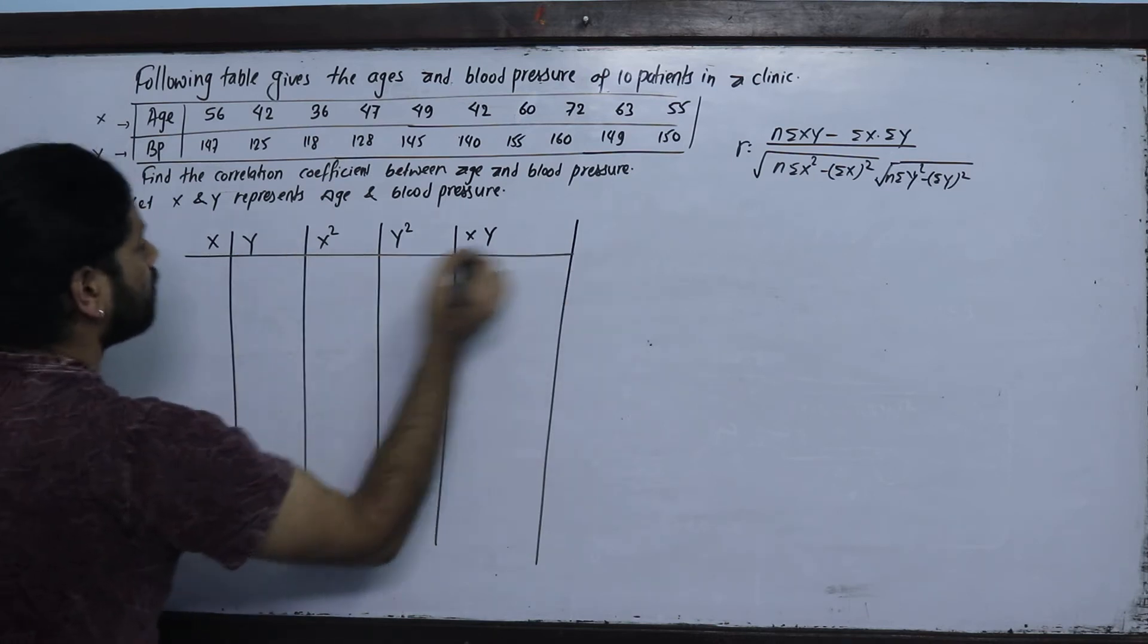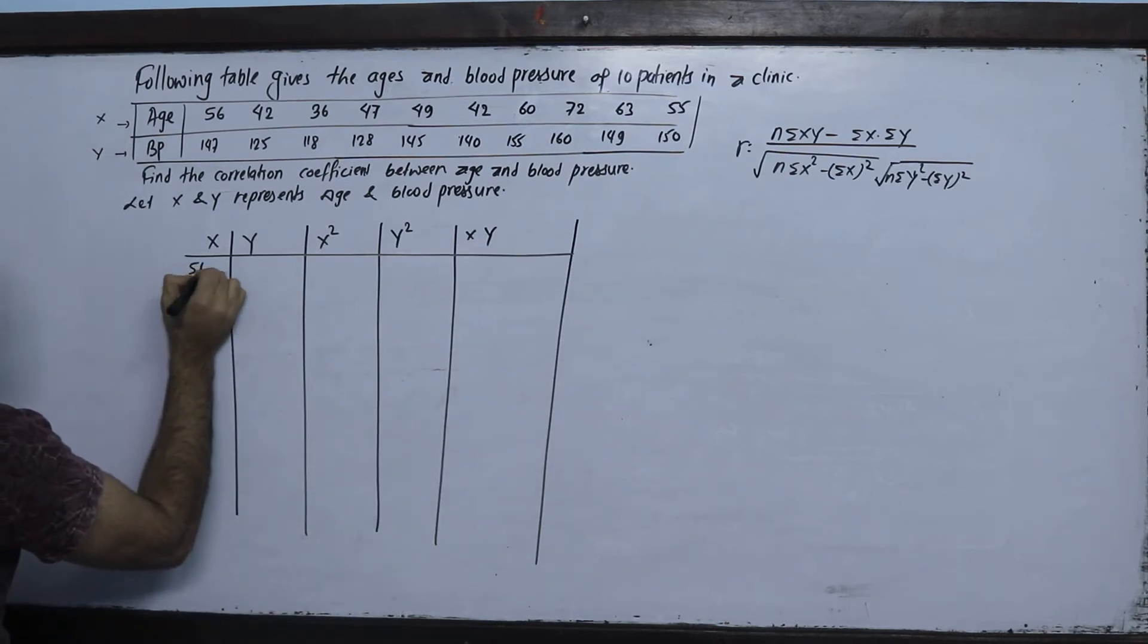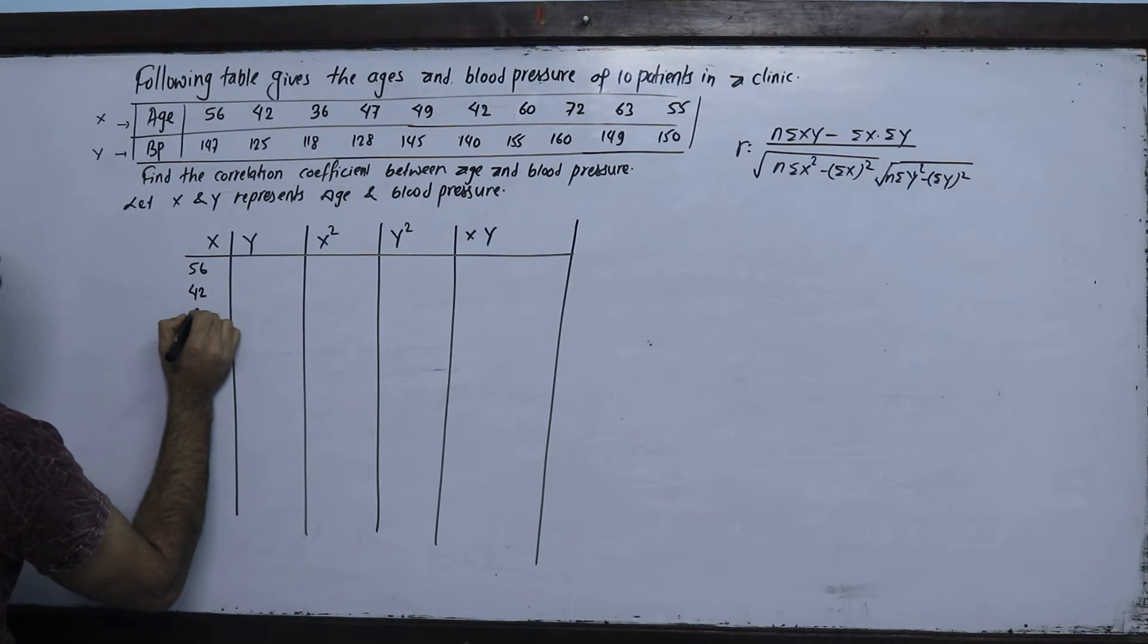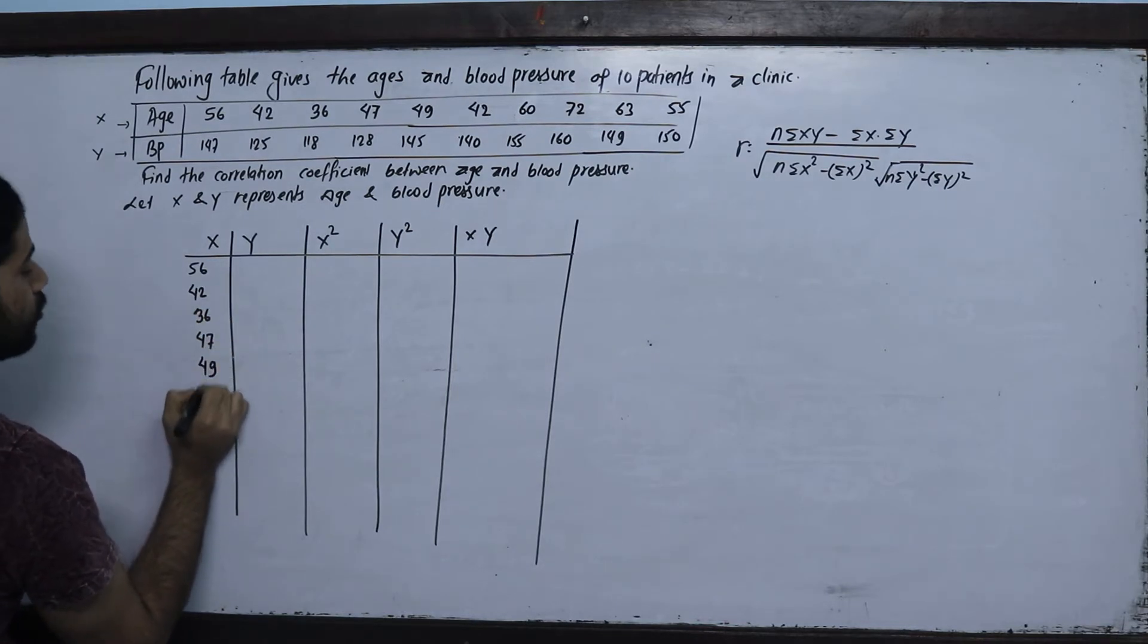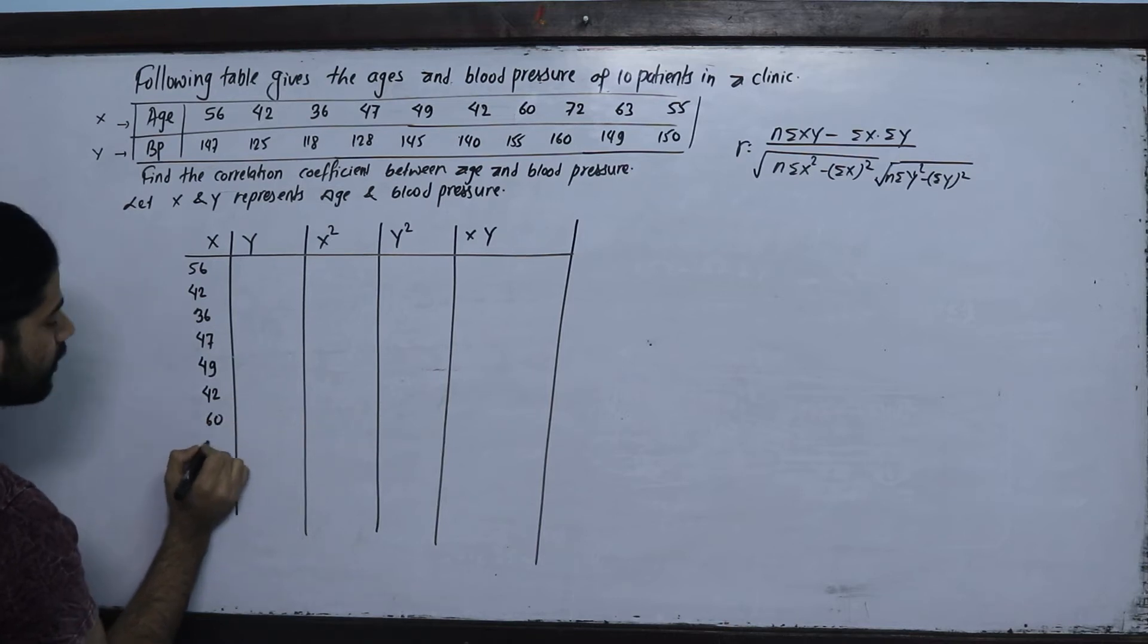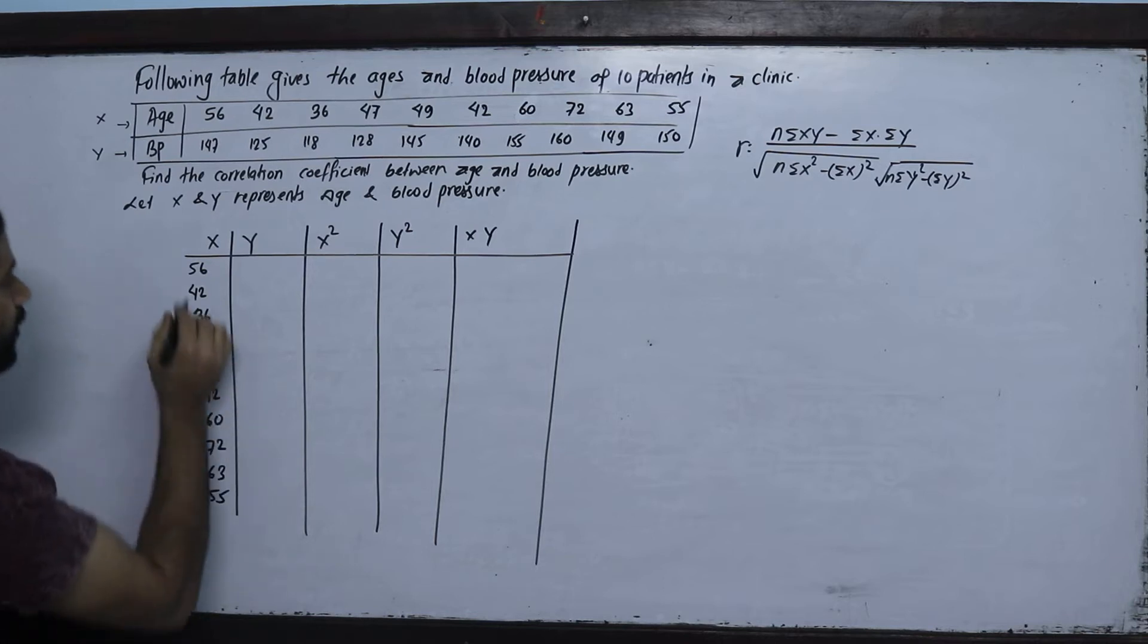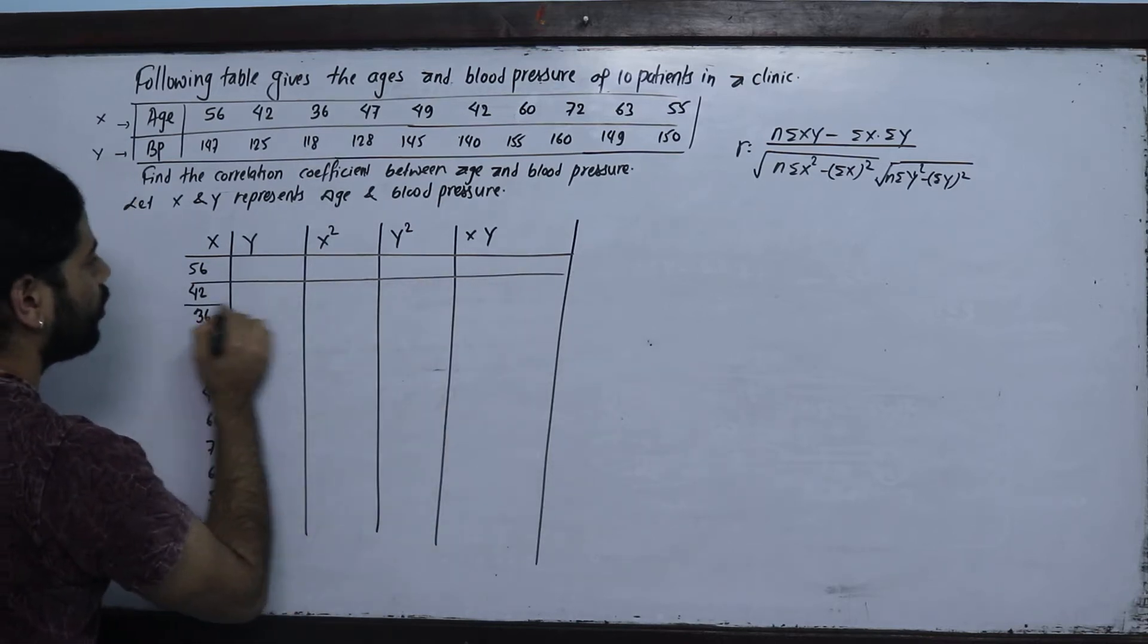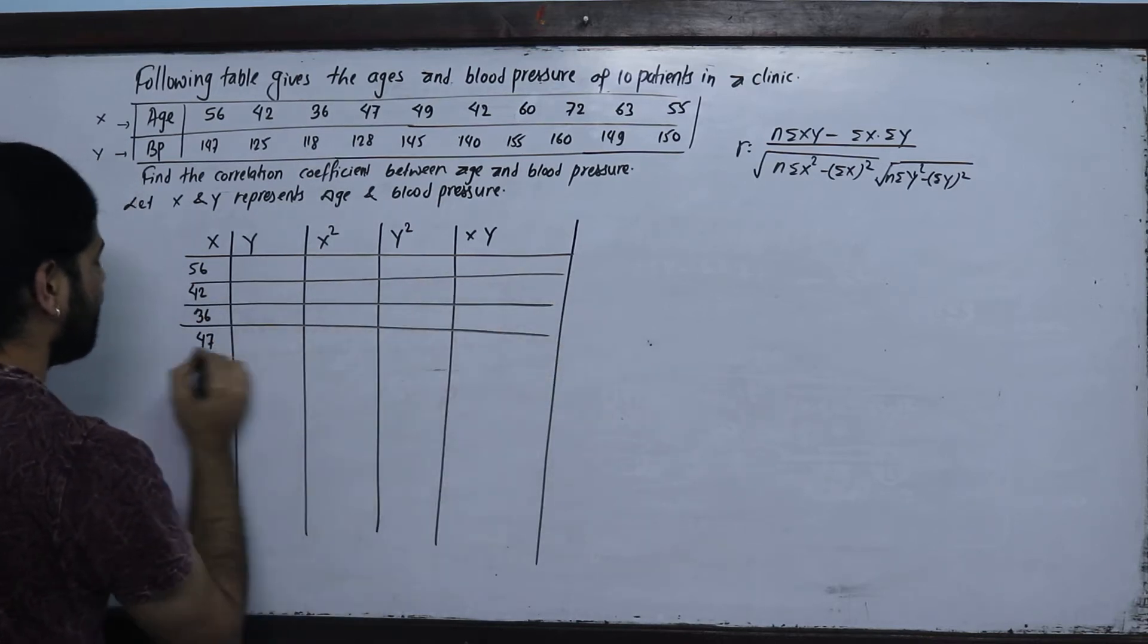Now for the x values, the ages are: 56, 42, 36, 47, 49, 42, 60, 72, 63, 55.